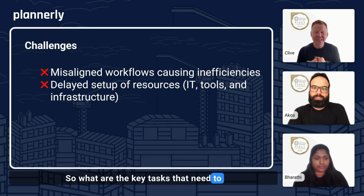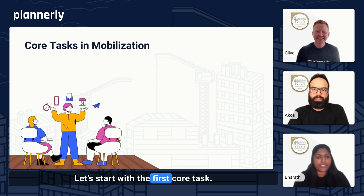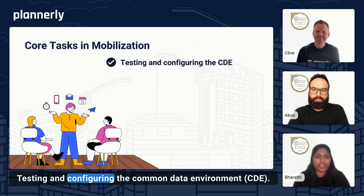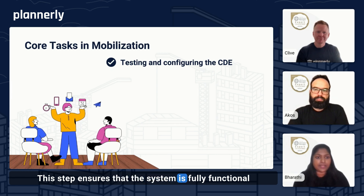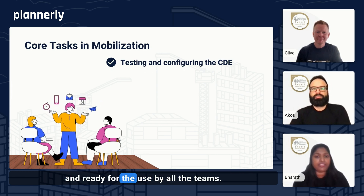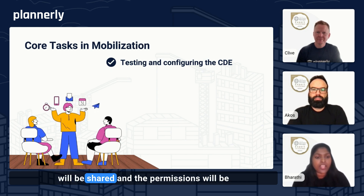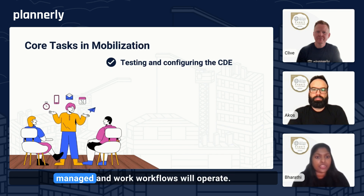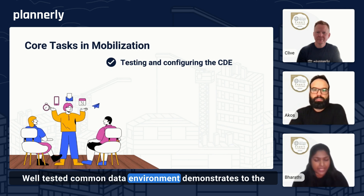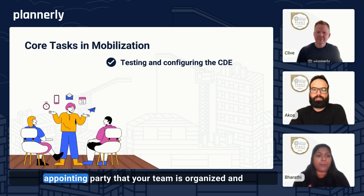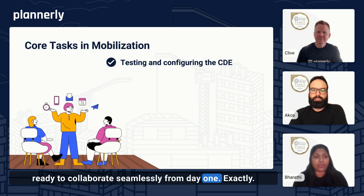So what are the key tasks that need to be addressed to get the mobilization plan right? Let's start with the first core task: testing and configuring the common data environment. This step ensures that the system is fully functional and ready for use by all teams. For example, you need to define how data will be shared, how permissions will be managed, and how workflows will operate. A well-tested common data environment demonstrates to the appointing party that your team is organized and ready to collaborate seamlessly from day one.